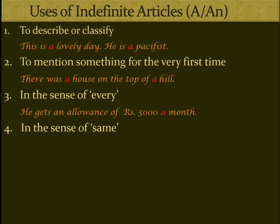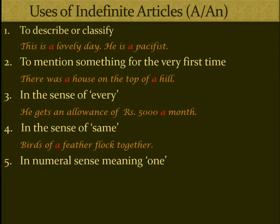Next is in the sense of 'same'. For example, 'Birds of a feather flock together' — here 'a feather' means the same feather. Also, 'a' and 'an' can be used in a numeral sense meaning 'one' — for example, '100 paise make a rupee', meaning one rupee. This is because 'a' and 'an' are weak forms of 'one'.